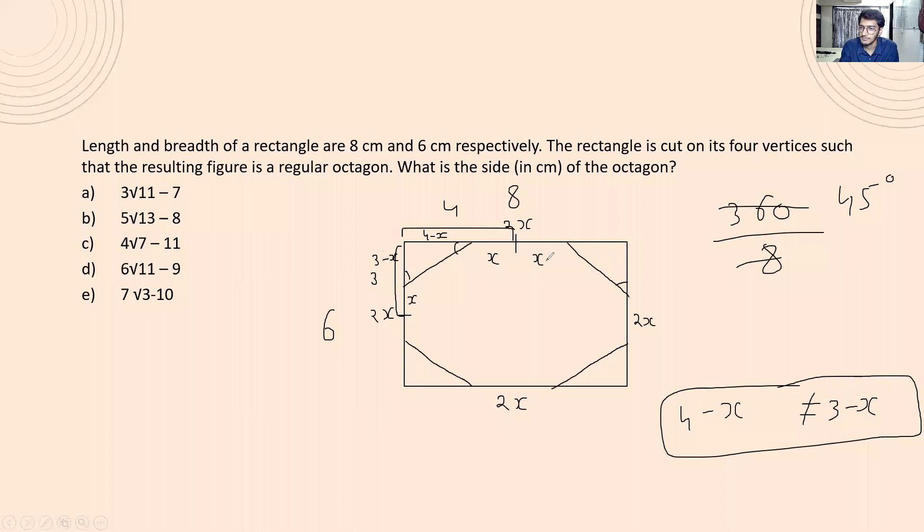This should be 8 minus 2x and this should be 6 minus 2x, meaning the value should be less than both 6 and 8. By default it has to be less than 6.